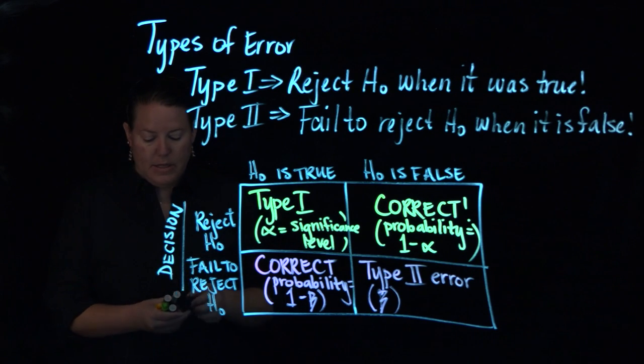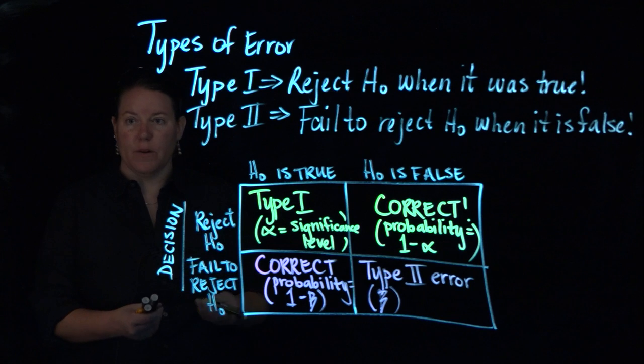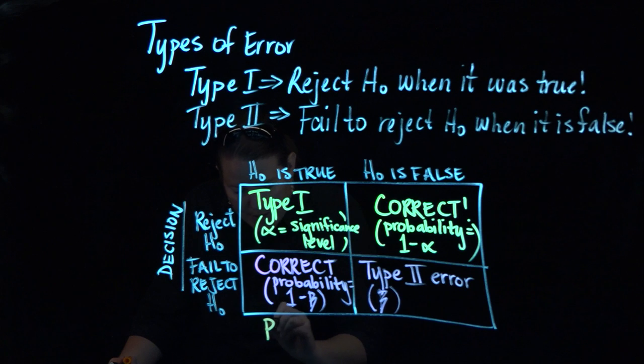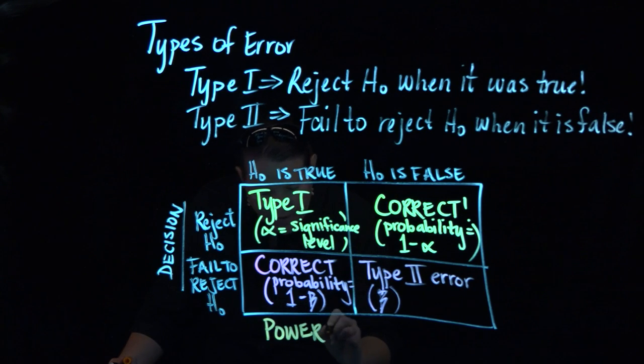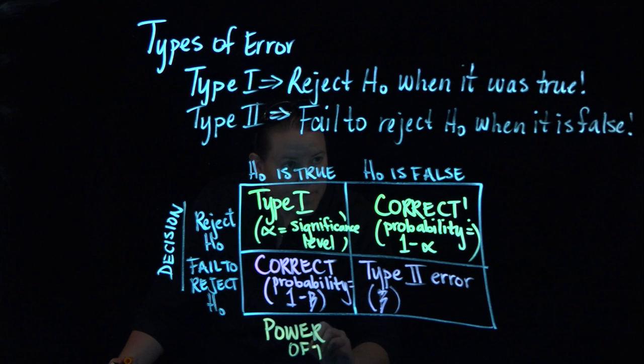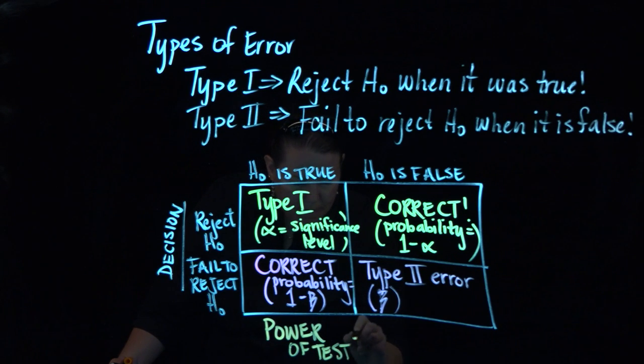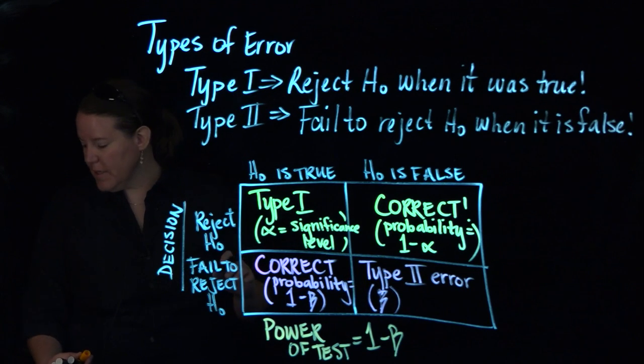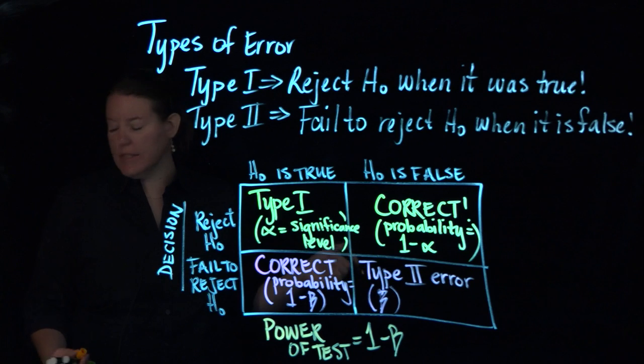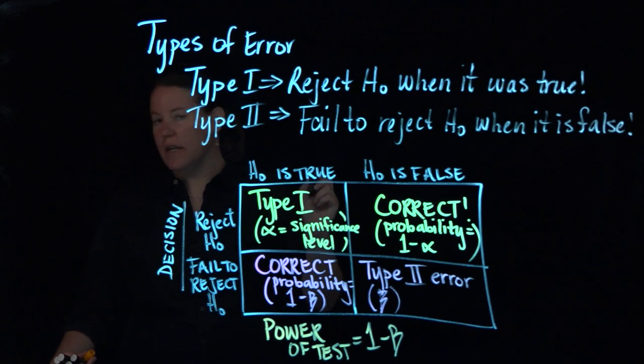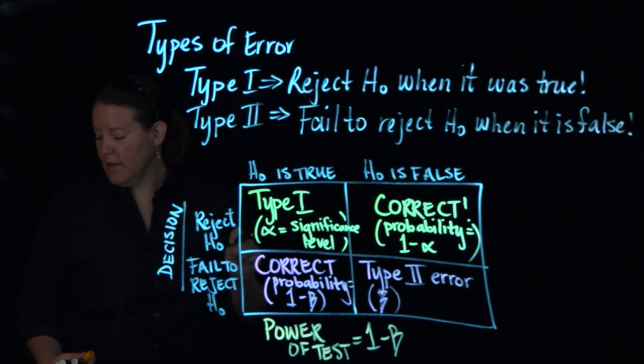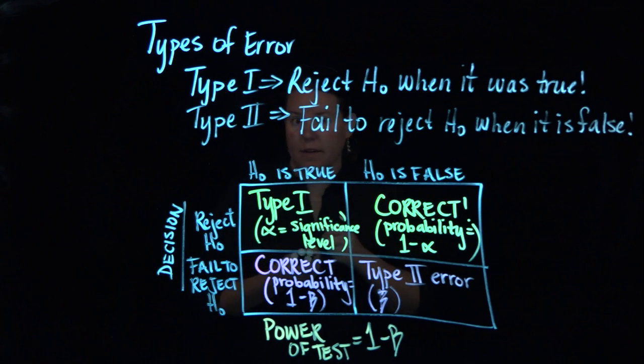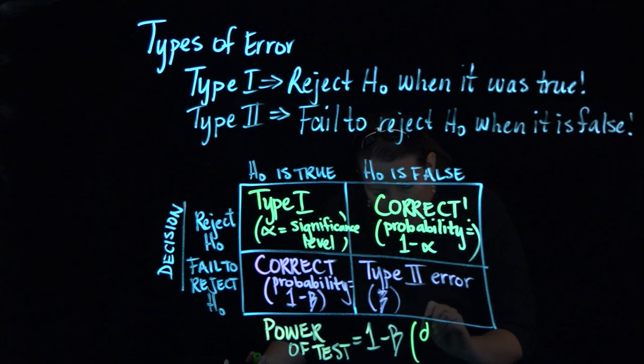This 1 minus beta is actually thought of as a different kind of thing, right? So it actually has its own moment and that's called the power of the test. What is the power of the test? The power of the test is also known as the sensitivity. It's the ability to detect an effect if the effect actually exists. So it's the ability of a test to detect an effect.